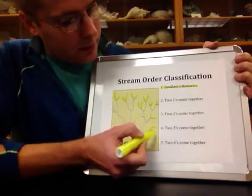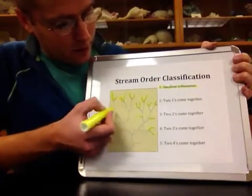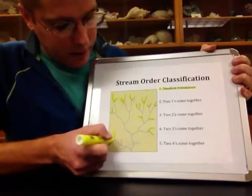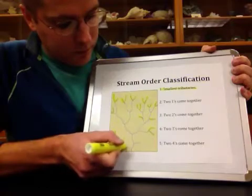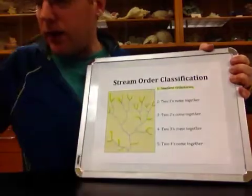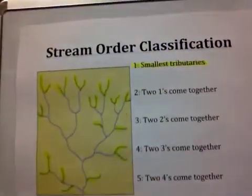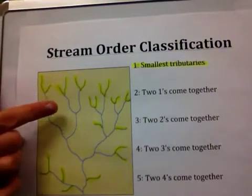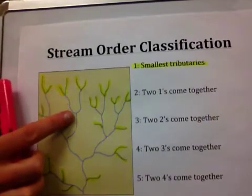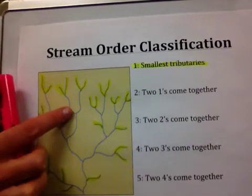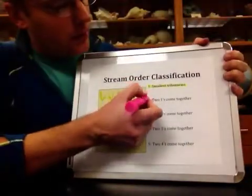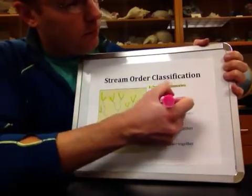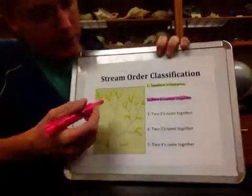Everywhere the small first order tributary streams are intersecting a bigger stream, we highlight that in yellow. For a second order stream, we are looking at where two first order streams come together. That next tributary, until it meets up with something else, is a second order stream, or a number two. I'm going to highlight that in pink.